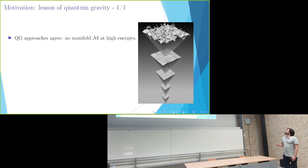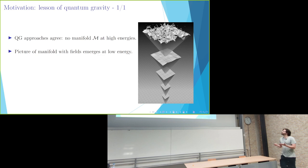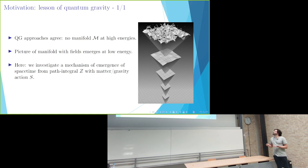Just to introduce the idea: as many quantum gravity approaches show, we don't really expect that a differentiable manifold is a good description of physics at very high energies. But a picture of a manifold with some matter fields on it should emerge at low energies. And what we did here is to try to investigate a mechanism of emergence, because this is still something that could be understood much better, how such a scheme of emergence would look.